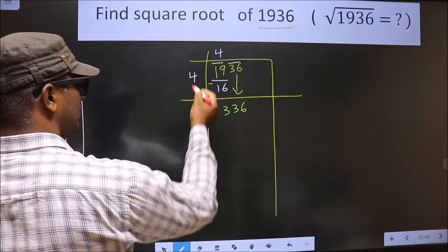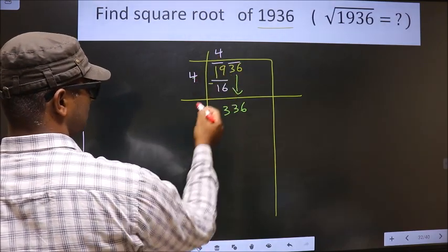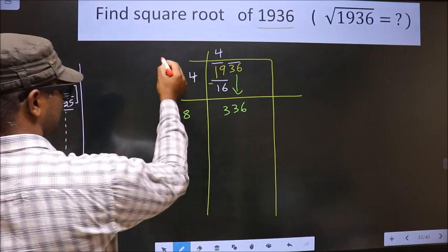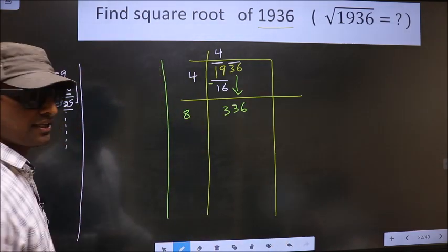Now here we should add these two numbers. That is 4 plus 4, 8. Okay, next.